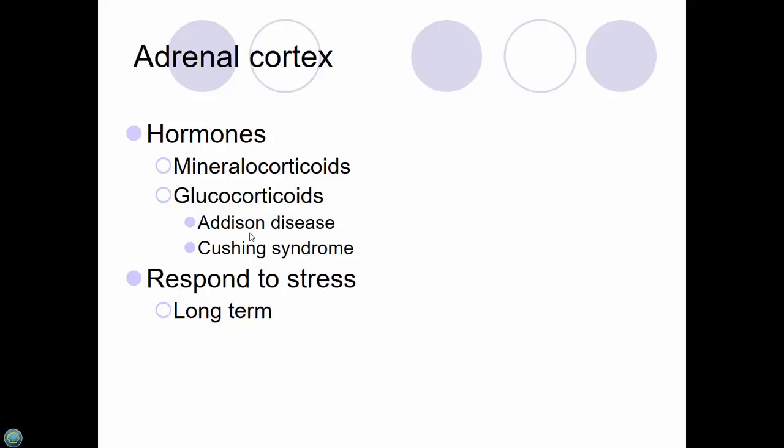The adrenal cortex produces mineral corticoids — the most important one is aldosterone, which helps your kidneys reabsorb sodium chloride. That becomes really important when you get to the kidney next semester. Glucocorticoids — cortisol is the primary one you need to know.